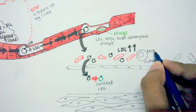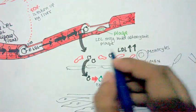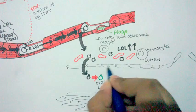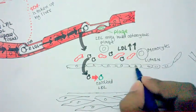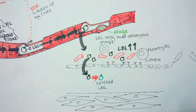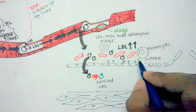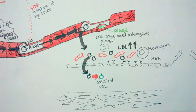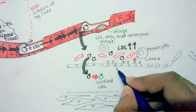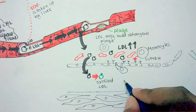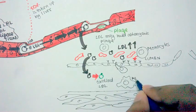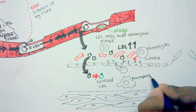In the meantime, there are a lot of monocytes circulating in the blood vessels and lumen. The oxidized LDL actually causes these endothelial cells to express adhesion molecules. Due to these oxidized LDL signals, endothelial cells produce adhesion molecules, and the monocytes are then attracted to and stick to these adhesion molecules, ultimately getting inside the tissue.